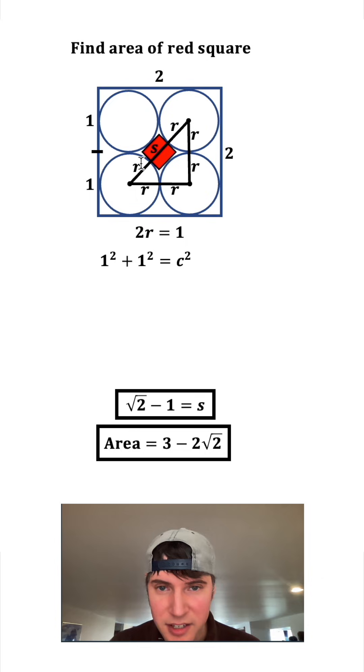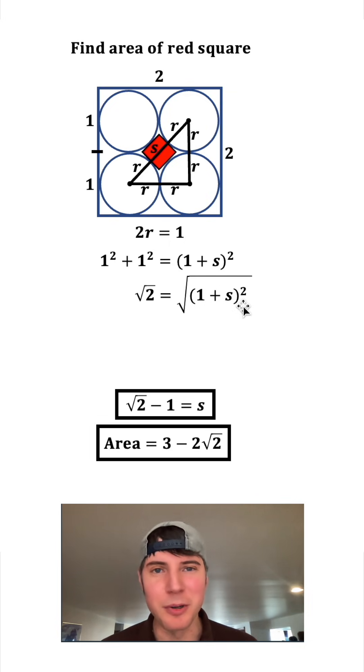And then r plus r is 2r, and we know that 2r is equal to one. So we can make that one. One squared plus one squared is just two. And from here we square root both sides. The root and the square cancel each other out to give us 1 plus s. We subtract one from both sides. This side becomes root two minus one, and this side just becomes s.